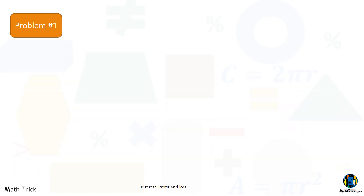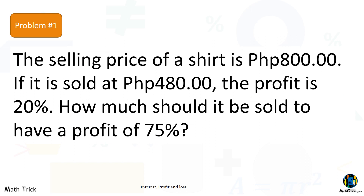Problem number 1. The selling price of a shirt is 800 pesos. If it is sold at 480 pesos the profit is 20%. How much should it be sold to have a profit of 75%? Why don't you give it a try before watching the complete solution? Share how you did it by writing a comment below.